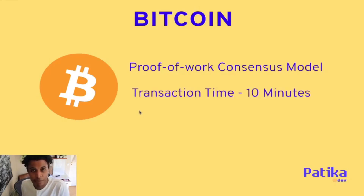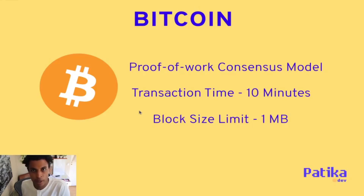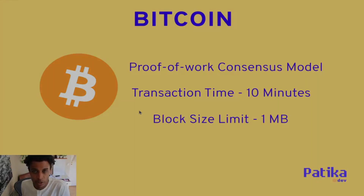The transaction time is 10 minutes, so anytime you want to send funds or tokens to another account, it roughly takes 10 minutes to confirm and for that transaction to be added to a block and verified and validated. The block size is limited to one megabyte of data per block. People say this is by design — Satoshi designed this as an anti-spam filter so one couldn't control the entire throughput of the network with spam transactions.